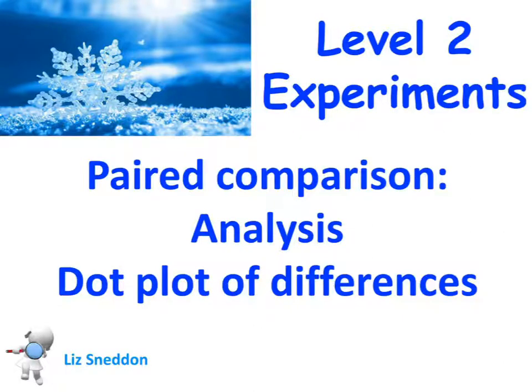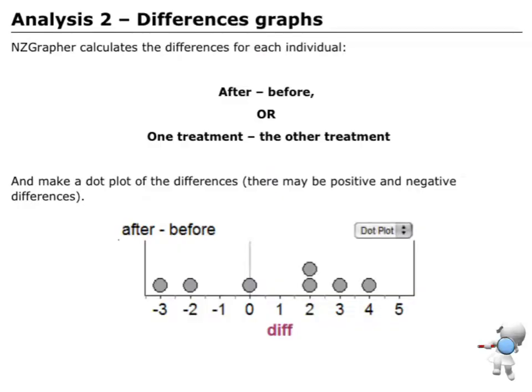Let's have a look at our analysis on when we do a dot plot of the difference. Remember how when I set up the data, I said we needed one column with the dominant hand, one column with the non-dominant hand, and one column with the difference?